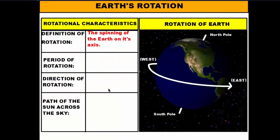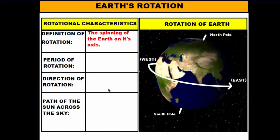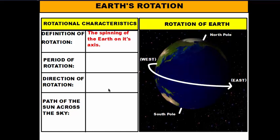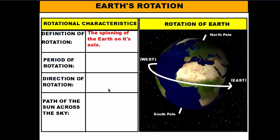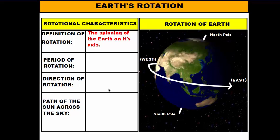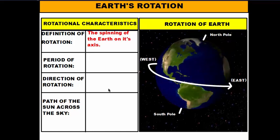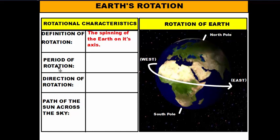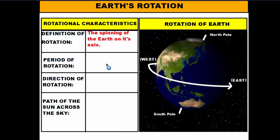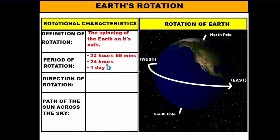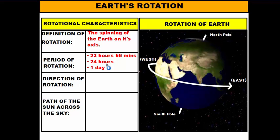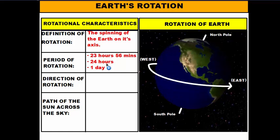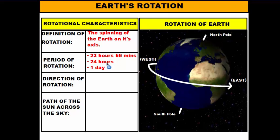It takes a certain amount of time for the Earth to complete one spin, and that's called the period of rotation. Think about your class periods — they're chunks of time designated for certain subjects. Similarly, the period of rotation is a block of time for the Earth to spin once. It actually takes the Earth 23 hours, 56 minutes, and some seconds, but we round that up to 24 hours, which equals one day.